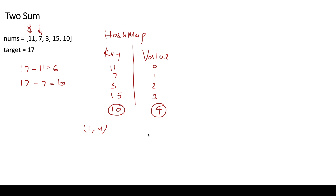This algorithm works in time complexity O(n). We traversed the array a couple of times — first to create the hash map and then while iterating. Actually, you do not need two passes; you can solve this problem in one traversal only. Let me show you how.